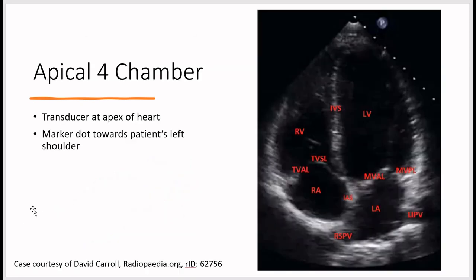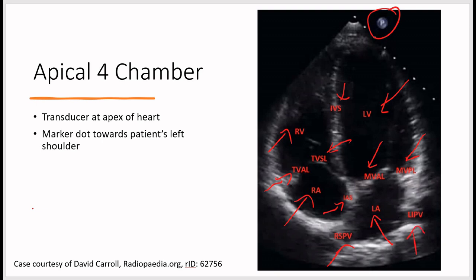For the apical four chamber view, move the transducer to the apex of the heart and point it upward toward the patient's head to reach the base of the heart, with the probe marker toward the patient's left shoulder. Structures include the left ventricle, interventricular septum, right ventricle, tricuspid valve with anterior and septal leaflets, right atrium, left atrium, atrial septum, mitral valve with anterior and posterior leaflets, and the pulmonary veins — specifically the right superior pulmonic vein and left inferior pulmonic vein.